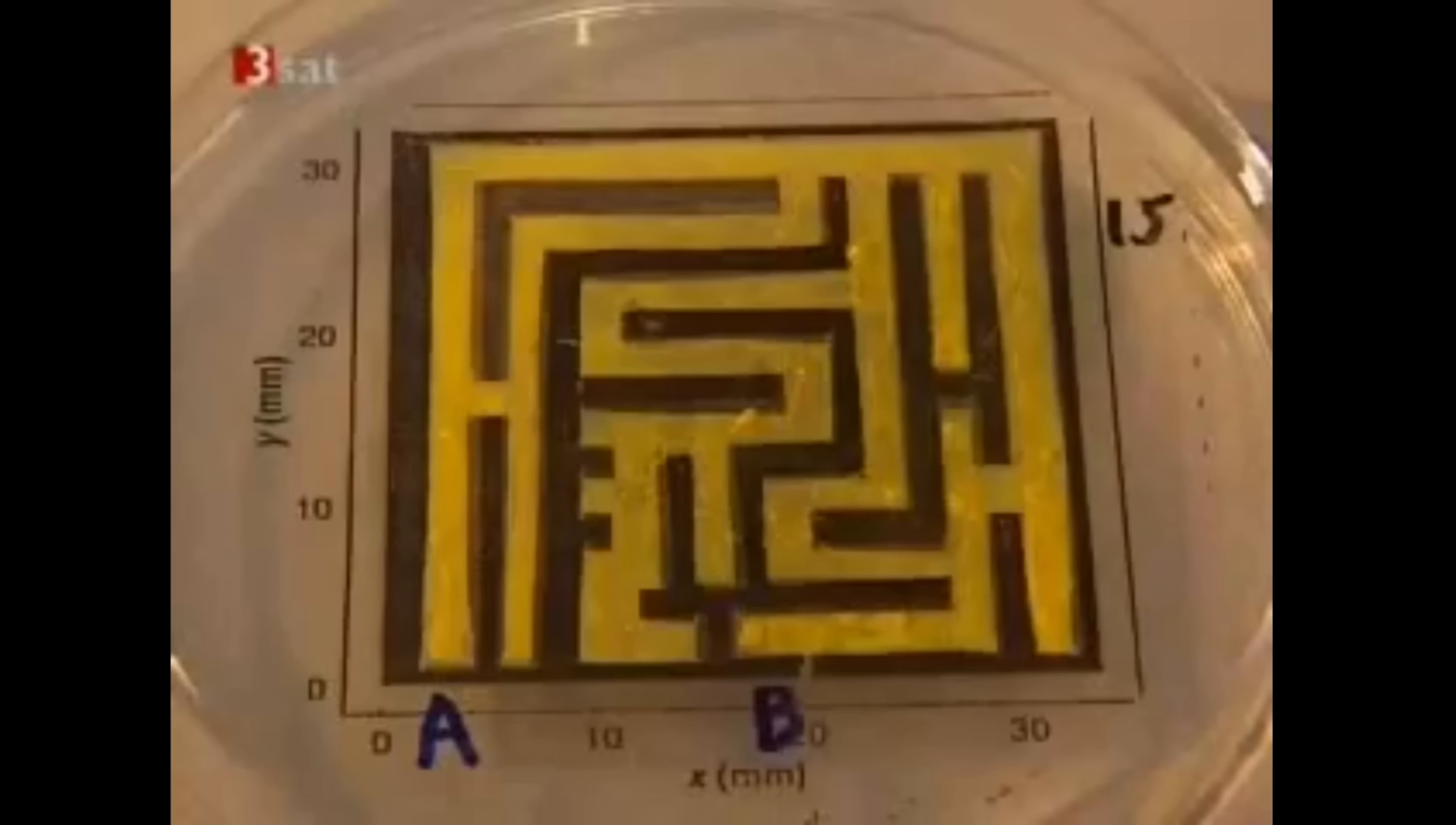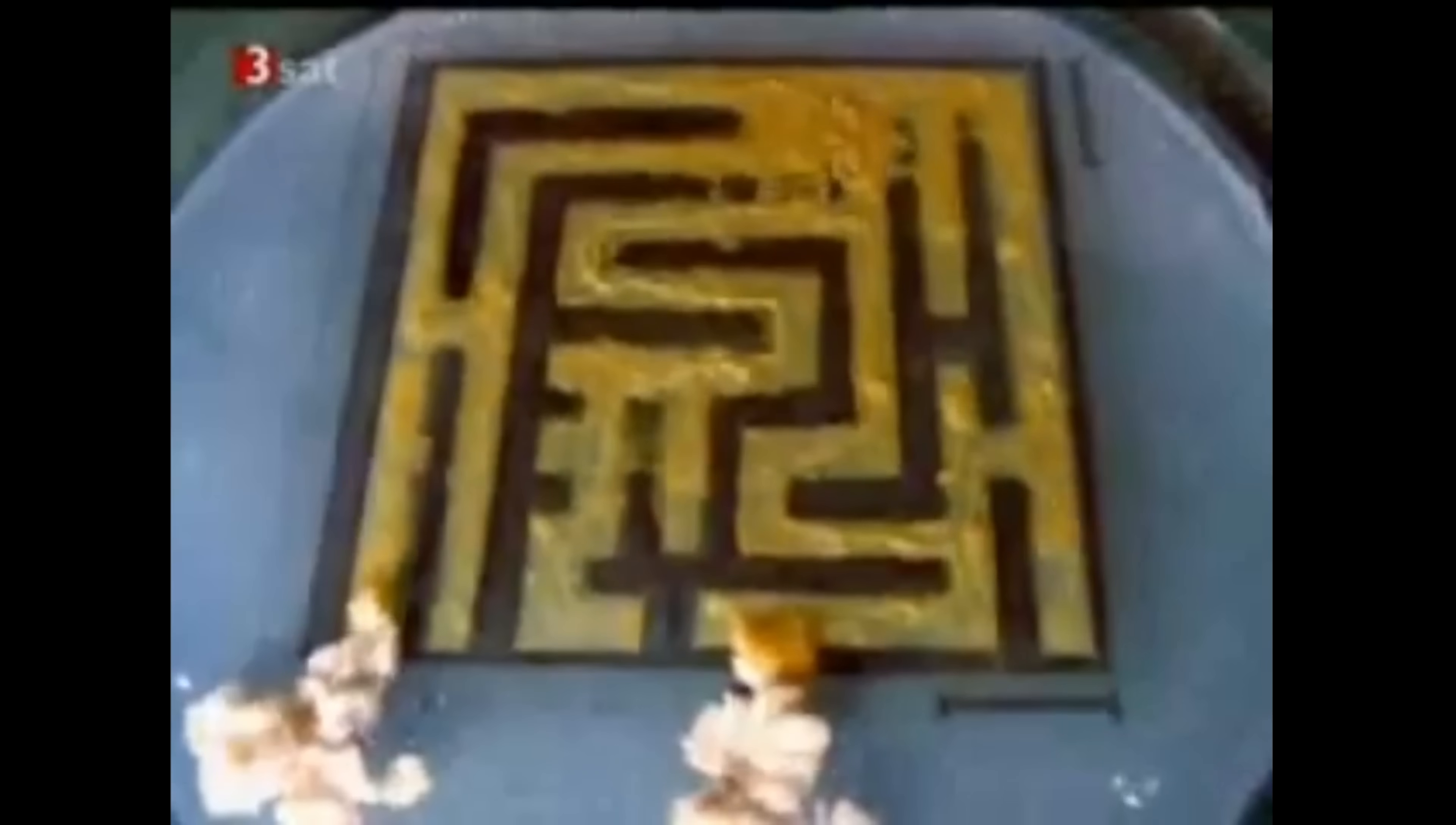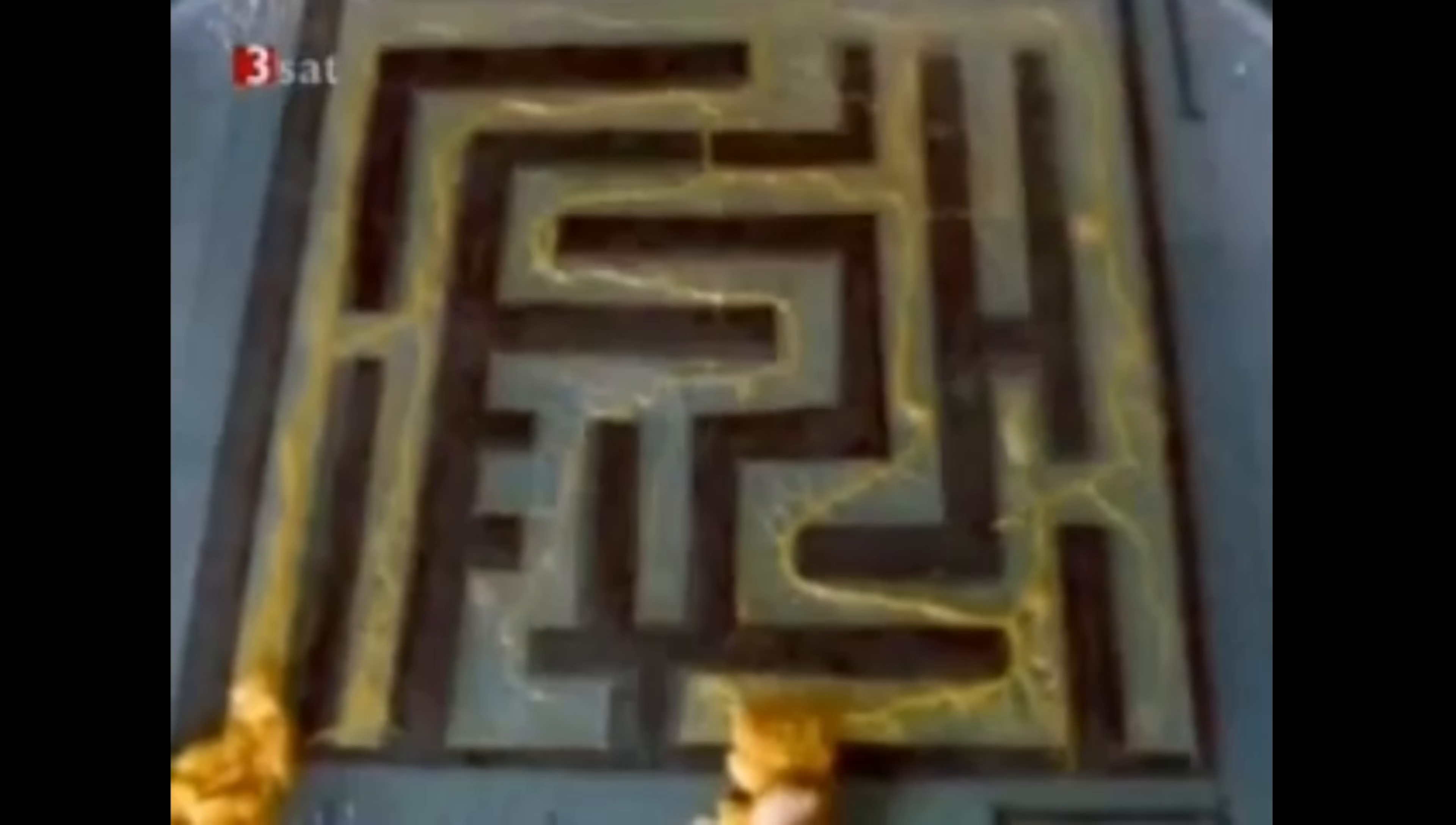Before I show you my setup, let's look at this nature paper and figure out exactly what it is that they did. Here's the maze that they used. They let the slime mold grow all through the maze, and then they put a piece of food at the start and at the end, and it shrunk its body, connecting the two food sources together with a thin tube. And that tube, they showed, followed the shortest possible pathway through this maze.